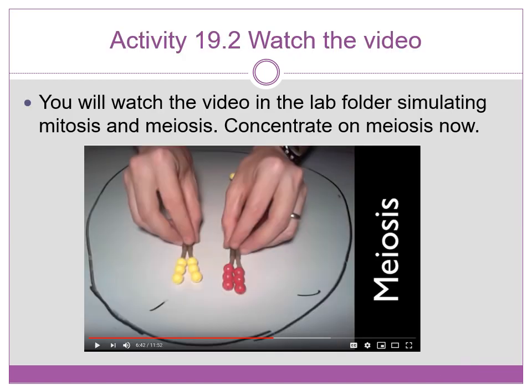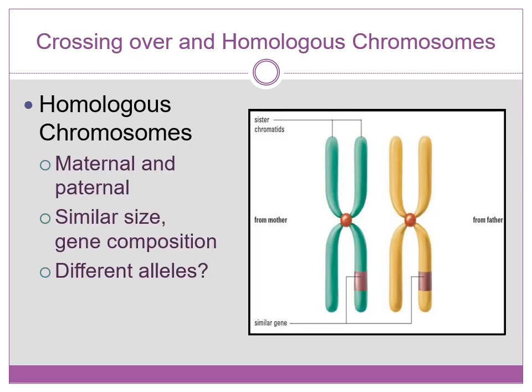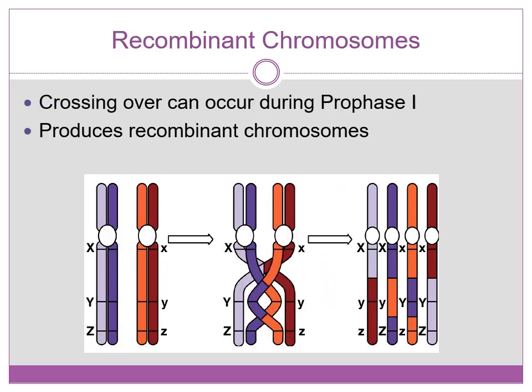The second half of the video you watch will be about meiosis. Answer any questions in the manual over meiosis using that video. Remember that for a homologous chromosome pair, we have a maternal chromosome and a paternal chromosome. They have similar size and gene composition, but may have different alleles or gene forms. During prophase one of meiosis, an event called crossing over can occur as the homologous pairs connect or synapse, and sister chromatids exchange genetic material, which includes genes.